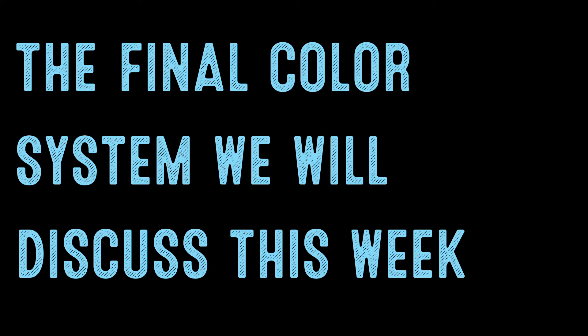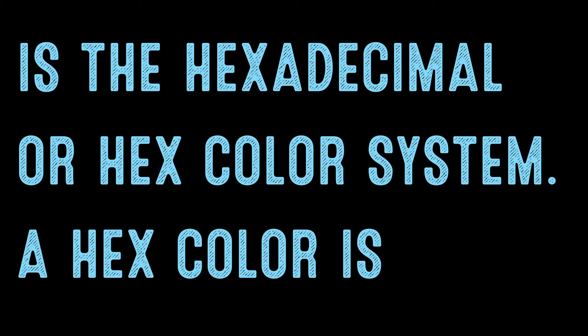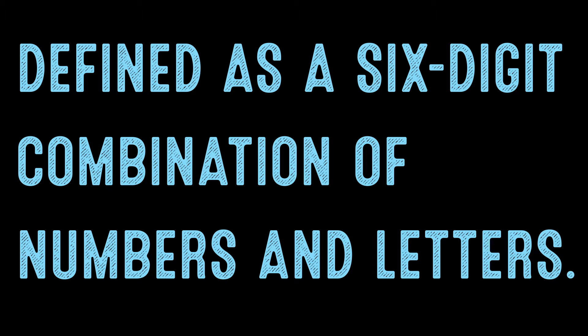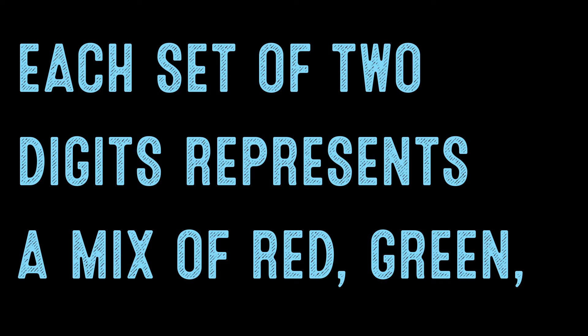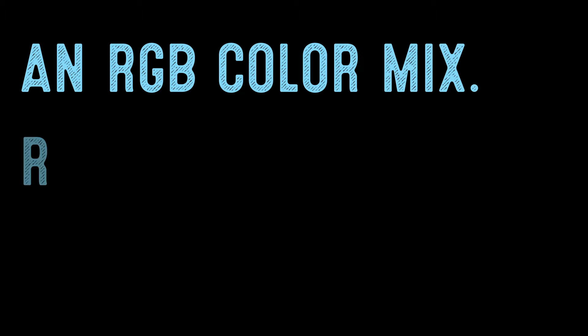The Daily Code Snippet. The final color system we will discuss this week is the hexadecimal or hex color system. A hex color is defined as a six-digit combination of numbers and letters. Each set of two digits represents a mix of red, green, and blue. It is a shorthand method of writing out the RGB color mix.